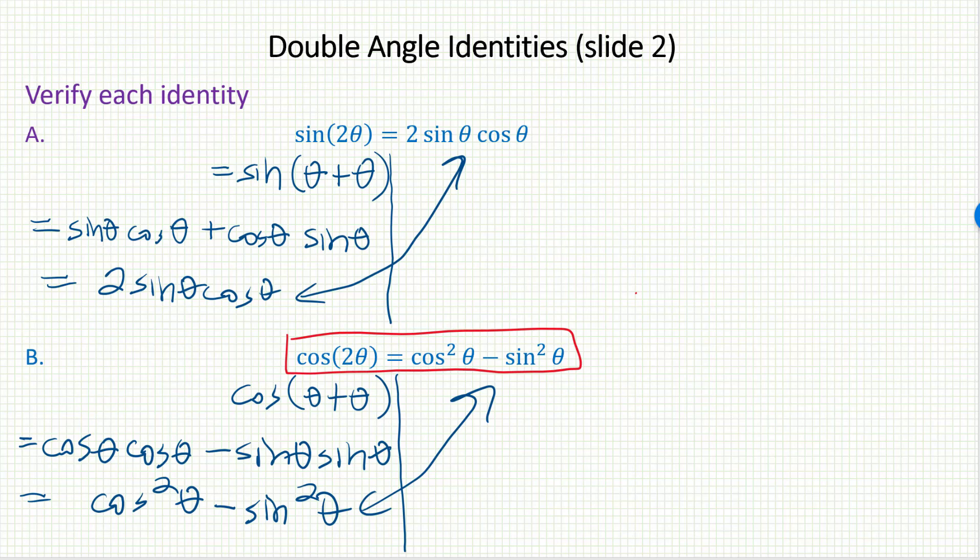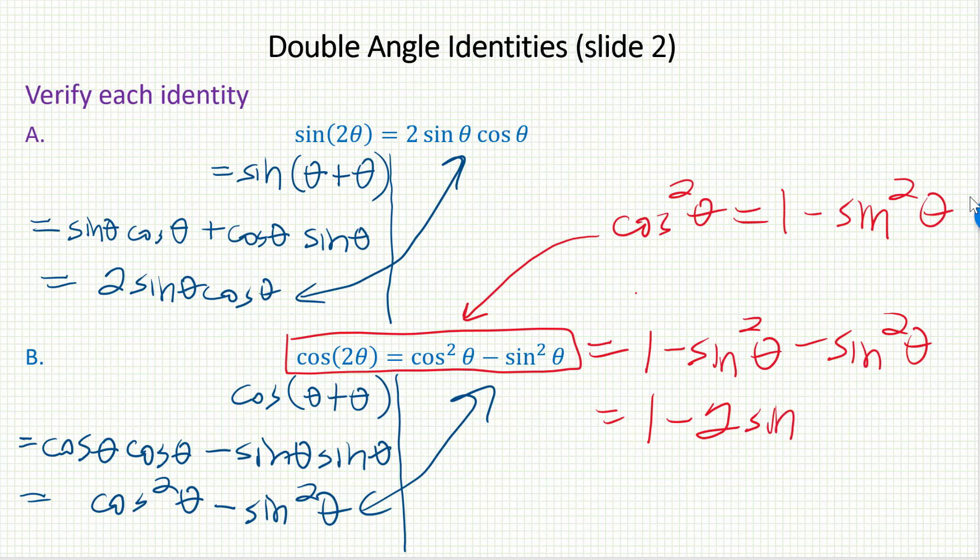To get the other ones, all you have to do is either replace cosine squared or sine squared using the Pythagorean identity. We've done this many times where we see a cosine squared theta and we replace cosine squared theta with one minus sine squared theta. That's right off the Pythagorean identity. If you were to do that here, you would have one minus sine squared theta minus that other sine squared theta. Those are like terms. And so I end up with one minus two sine squared theta.